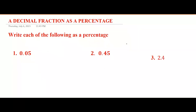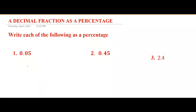Now let's see how to write a decimal fraction as a percentage. This is simple — multiply by 100%, but in this case we shift the decimal point. For 0.05 as a percentage, multiply by 100%. Since 100 has two zeros, shift the decimal point forward two places.